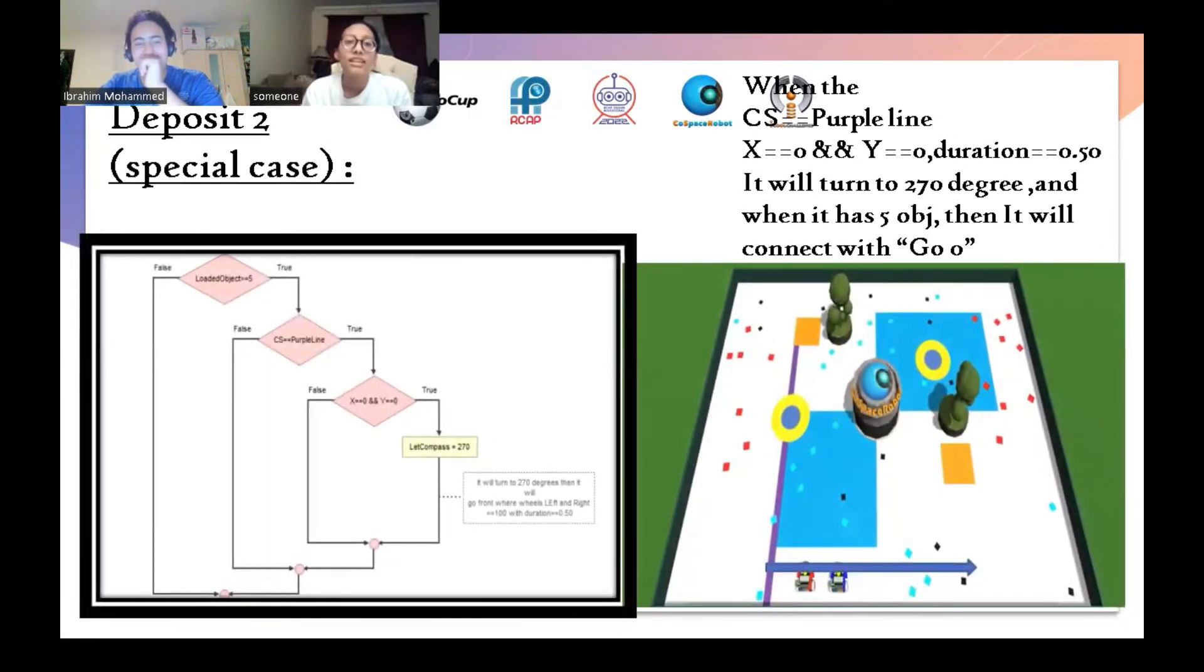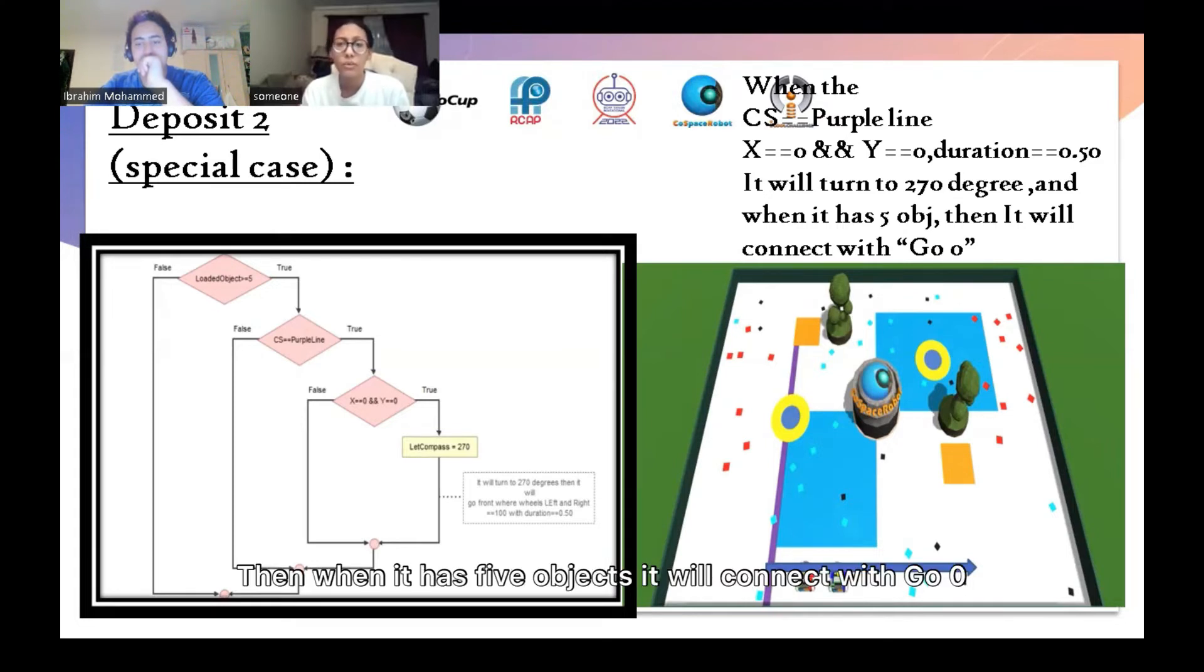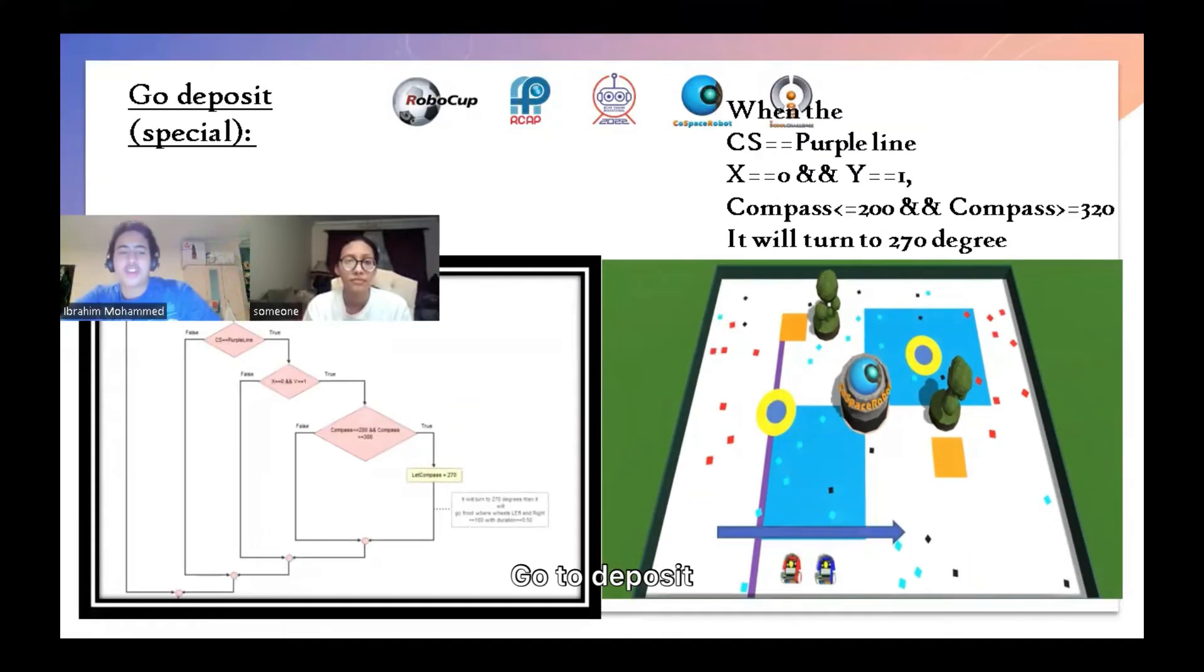Deposit 2 special case: When the color sensor sees the purple line, and x equals 0 and y equals 0, the duration will be 0.5, then it will turn to 270 degrees. Then, when it has 5 objects, it will connect with go.